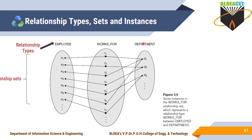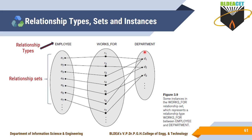Next are relationship sets. Relationship sets are the set of entities of employee related with the set of entities of the department — relating all the entities of one entity type with the entities of another entity type. That is what we call a relationship set.